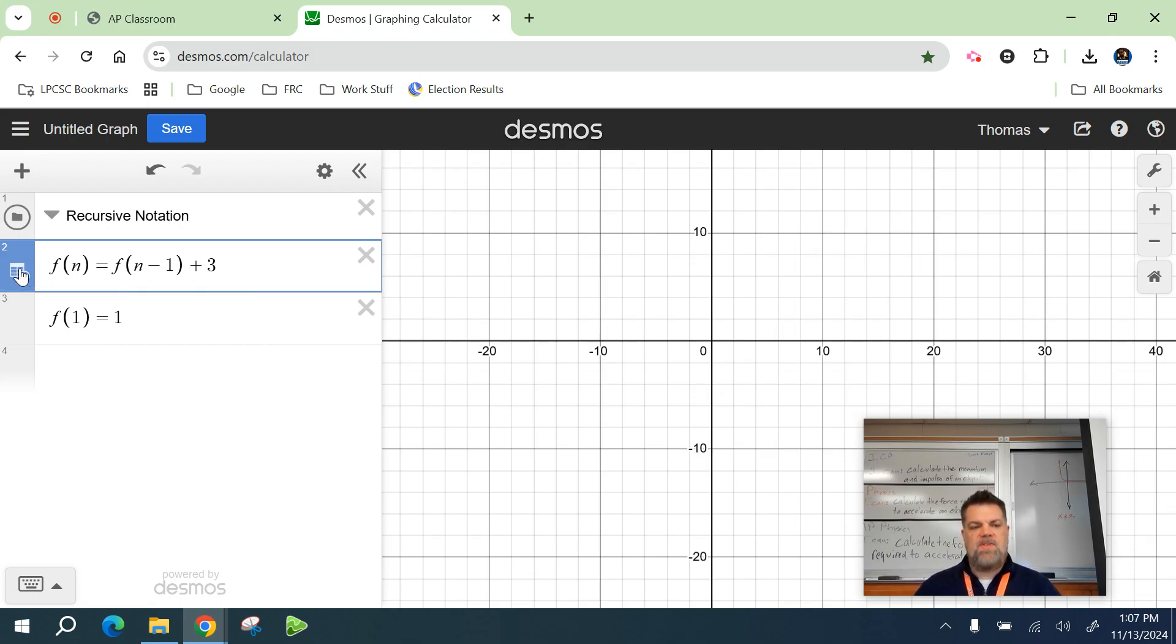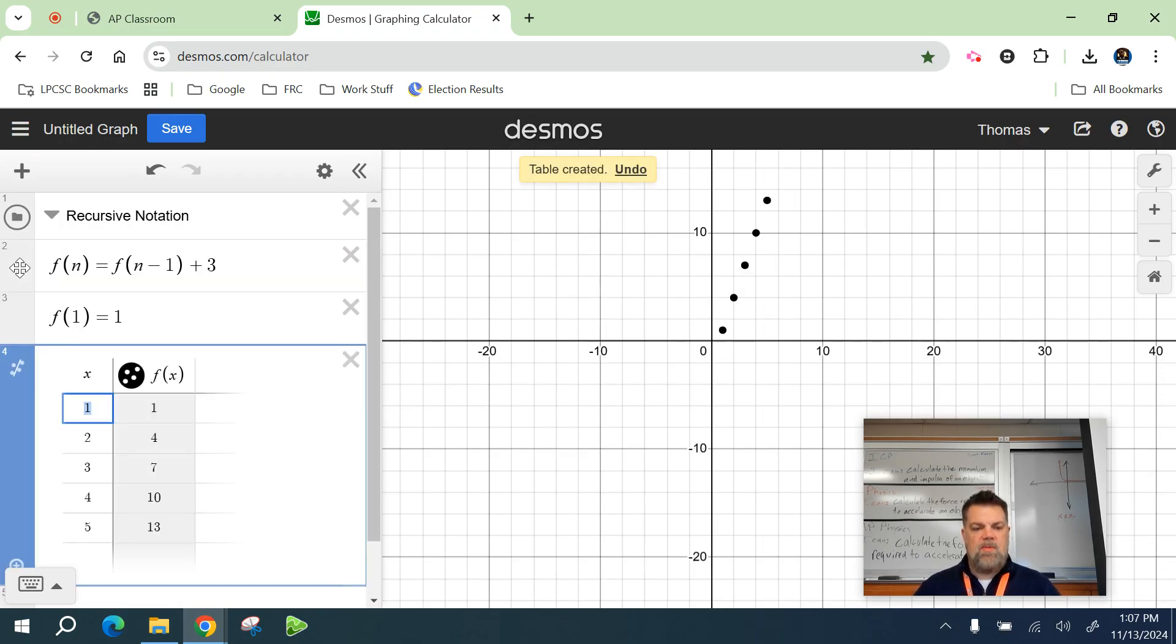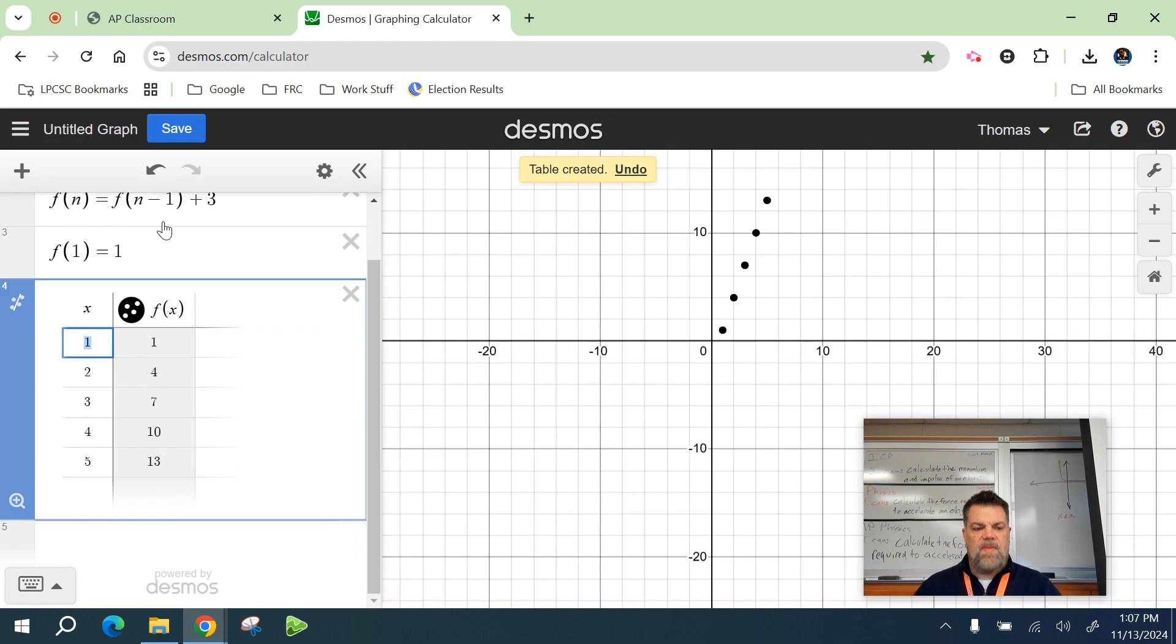And so we're counting by terms in the sequence. If I click on create a table, it'll create a table for me. Now it'll plot the table. So my first term, the value is one.